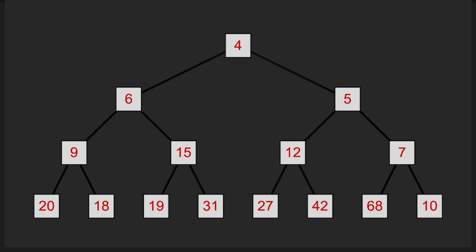When we want to remove the node with the lowest F cost, that will always be the node at the top of the heap. We remove that node, take the node at the end of the heap and slot it in at the top, then compare it with each of its two child nodes. If it's greater than either of them, we swap it with the lowest one, and keep doing this until it's in the correct position.